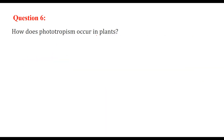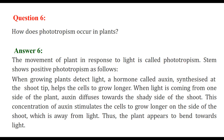How does phototropism occur in plants? When plants are subjected to light, they tend to bend towards it — the movement of a plant in response to light is known as phototropism. When a growing plant detects light, a hormone known as auxin is synthesized at the shoot tips, helping cells grow longer. When light comes from one side, auxin diffuses towards the shady side of the shoot, stimulating cells to grow longer on the side away from light. That is why the plant appears to bend towards the light, which is phototropism.